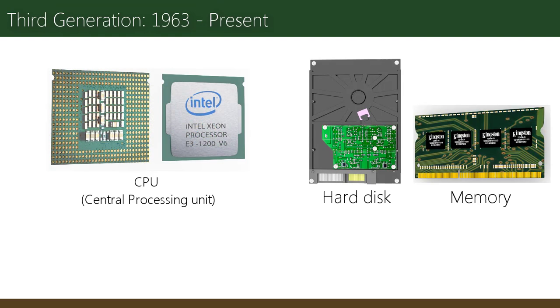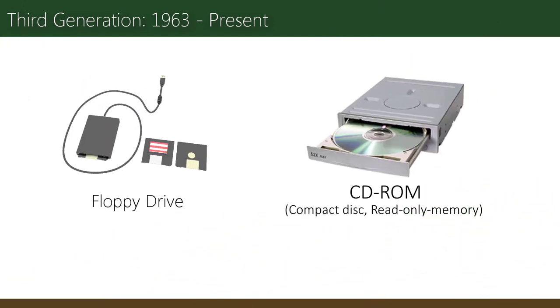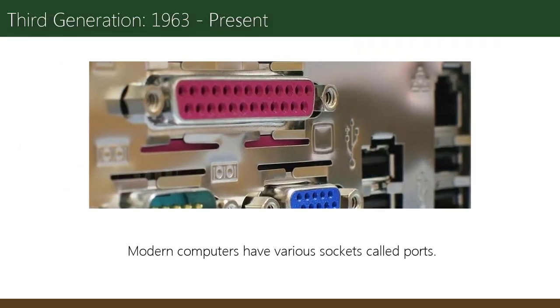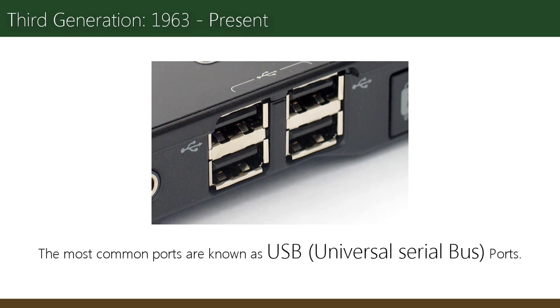The main internal parts are the motherboard, CPU (central processing unit), the hard disk, and memory. Floppy drives and CD-ROM (compact disk read-only memory) drives are used for storing information on removable disks. Modern computers have variable sockets called ports, and the most common ports are known as USB, or Universal Serial Bus ports.